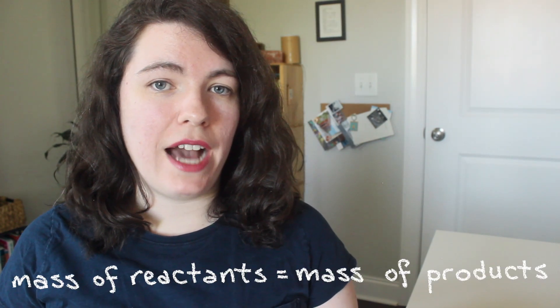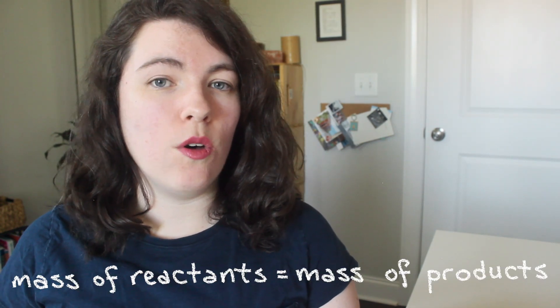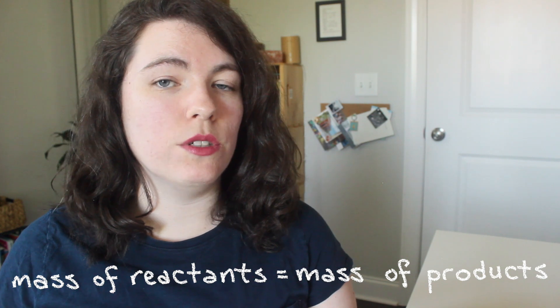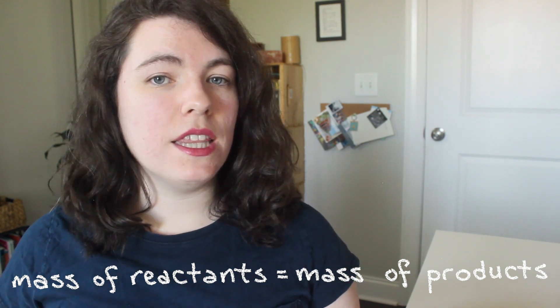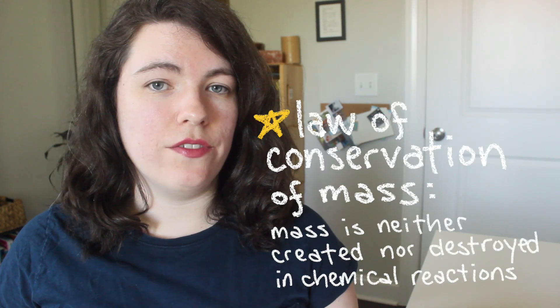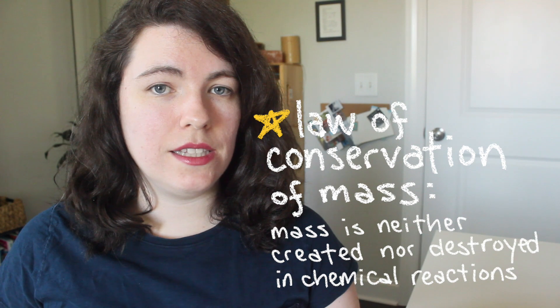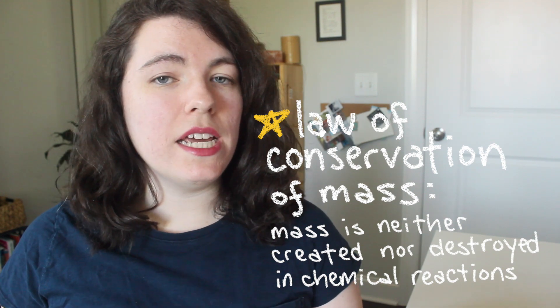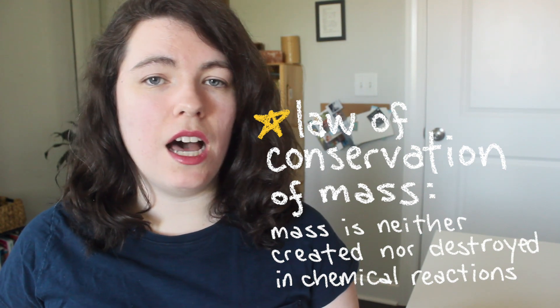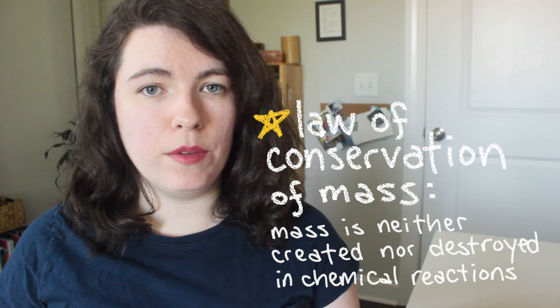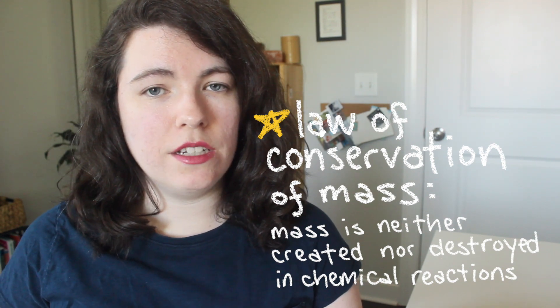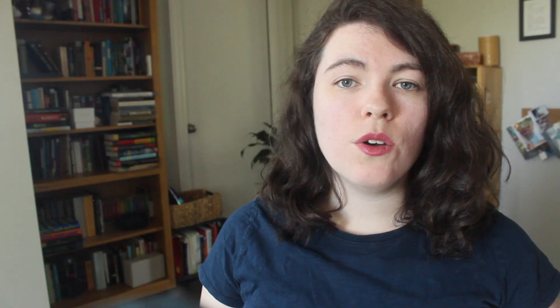An important rule about chemical reactions is that the mass of the reactants must always be equal to the mass of the products. This is called the law of conservation of mass, and it means that nothing is lost or used up during a chemical reaction — it's only rearranged.